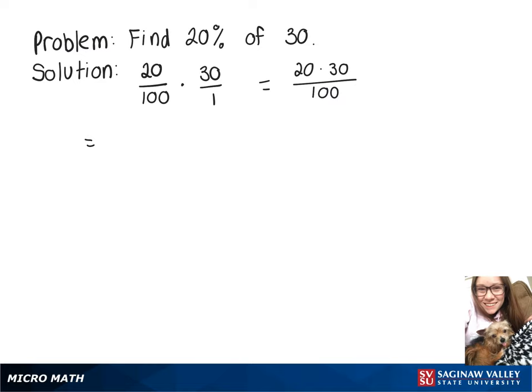20 times 30 is 600, so we have 600 over 100, and when you divide that, you get 6.